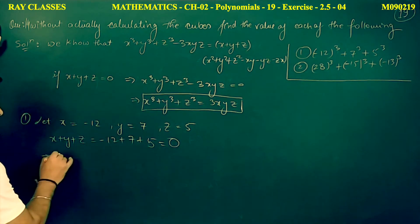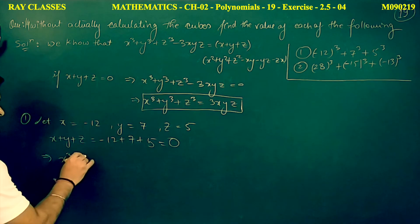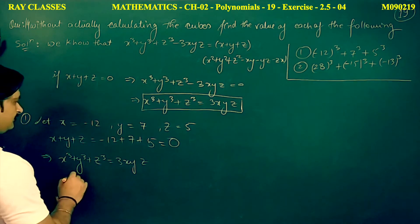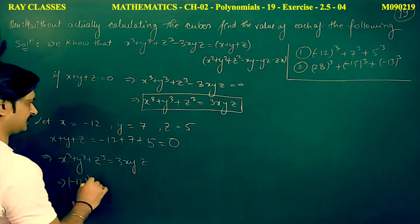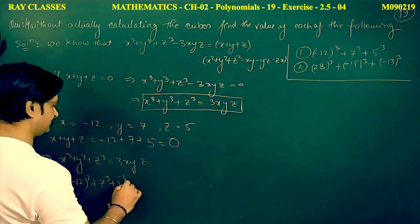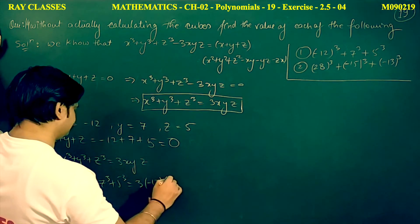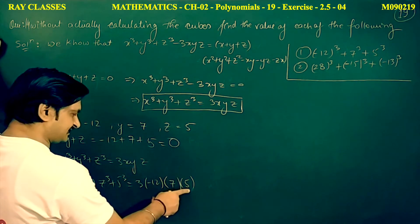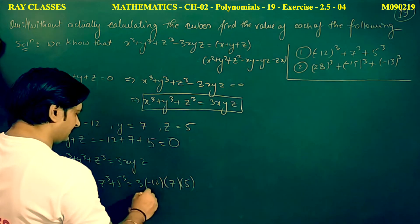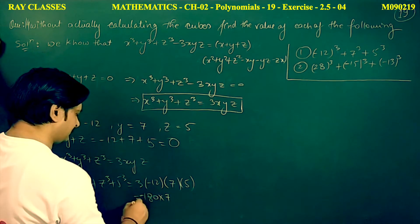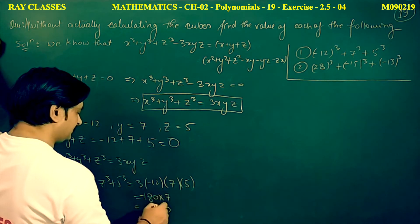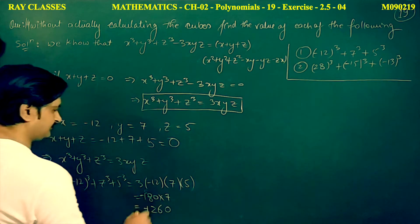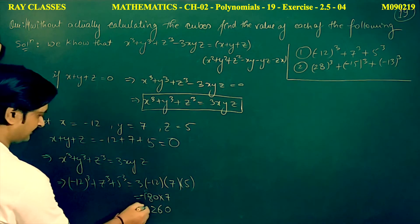Since x plus y plus z equals 0, this implies x cubed plus y cubed plus z cubed equals 3xyz. Therefore (minus 12) cubed plus 7 cubed plus 5 cubed equals 3 times (minus 12) times 7 times 5 equals minus 1260.